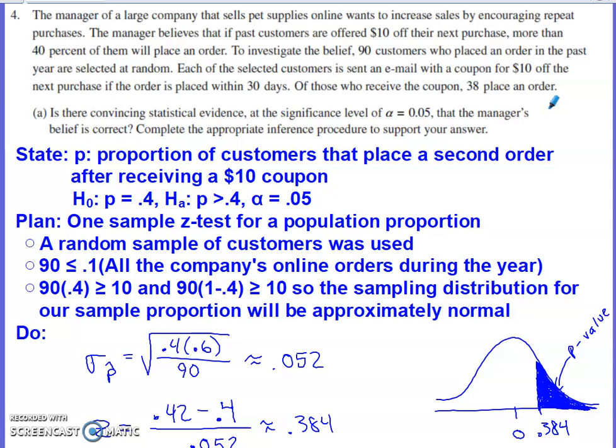Part A asks: is there convincing statistical evidence at the significance level of α = 0.05 that the manager's belief is correct? Complete the appropriate inference procedure to support your answer. The inference procedure we're dealing with is a significance test, since they give us the significance level and aren't asking for a confidence interval.